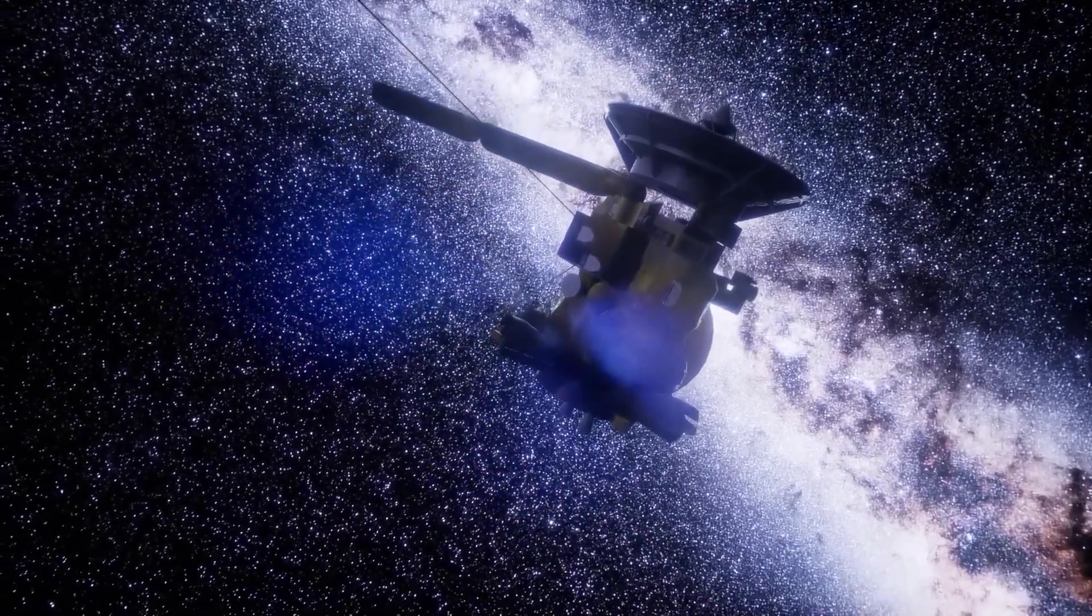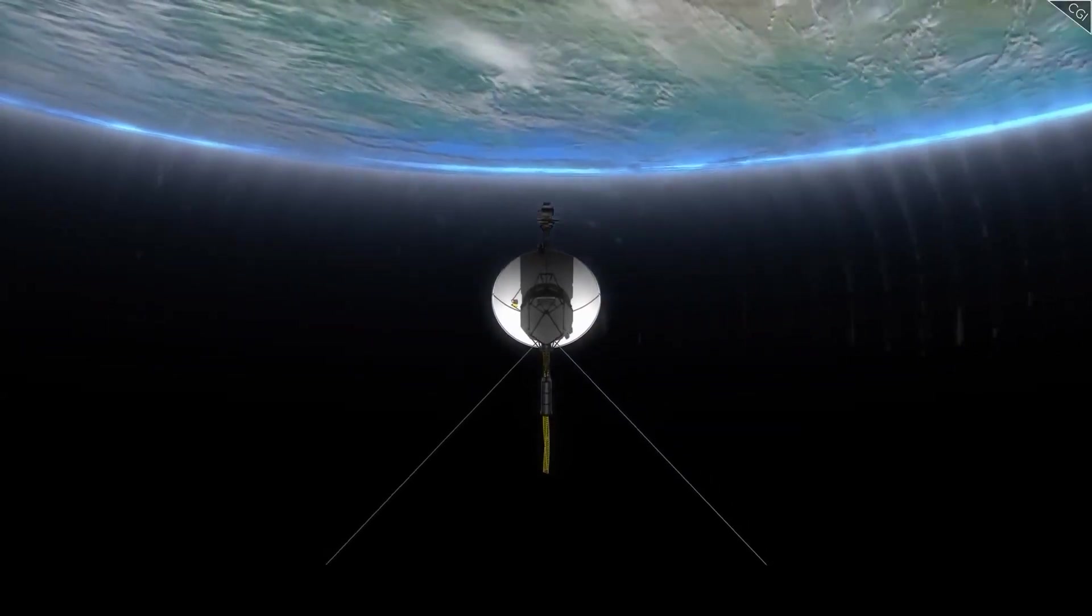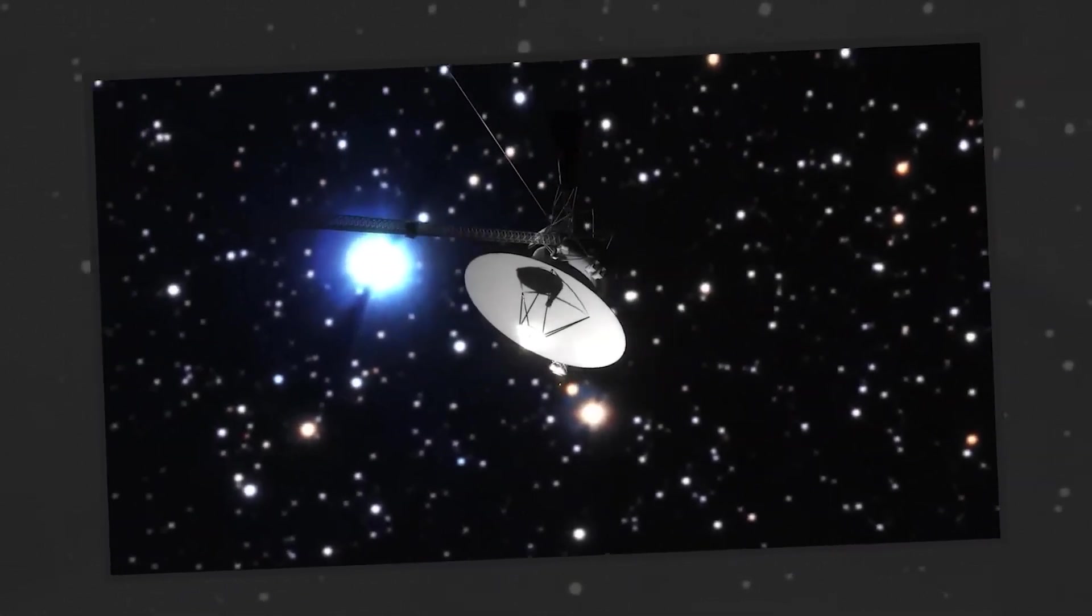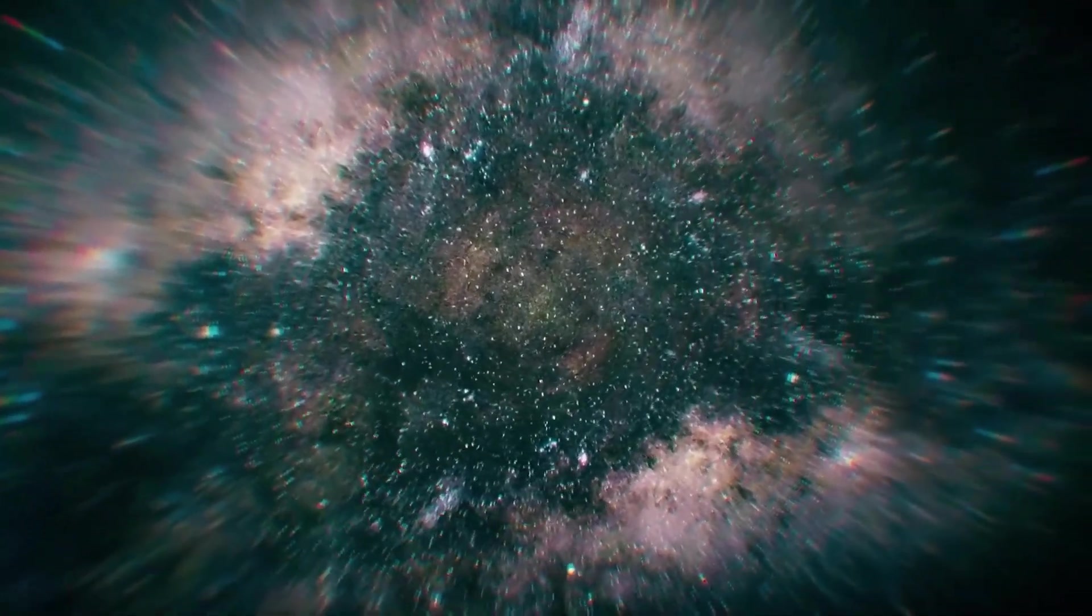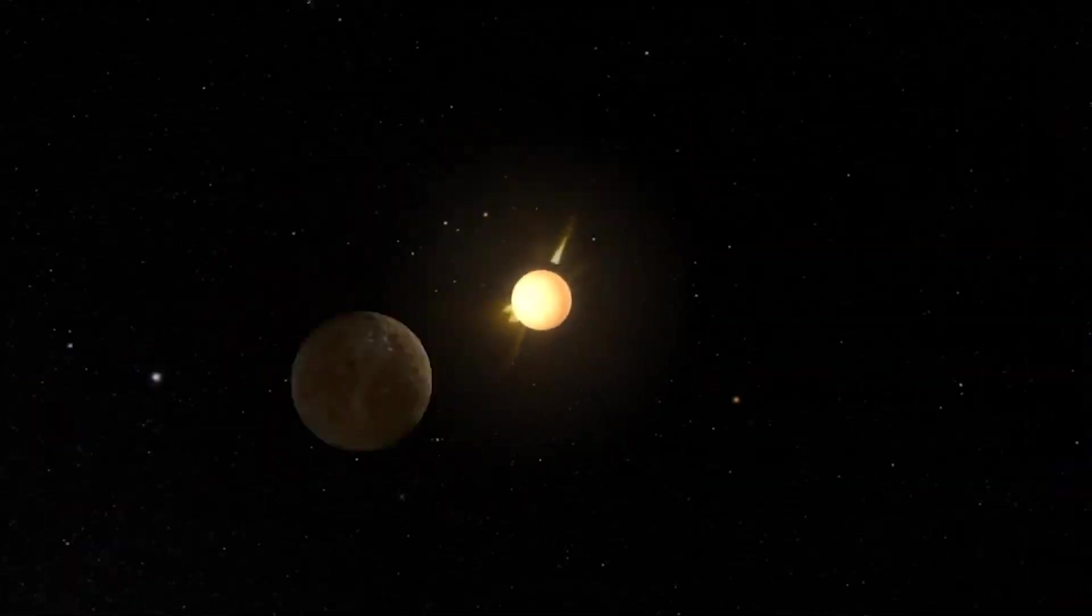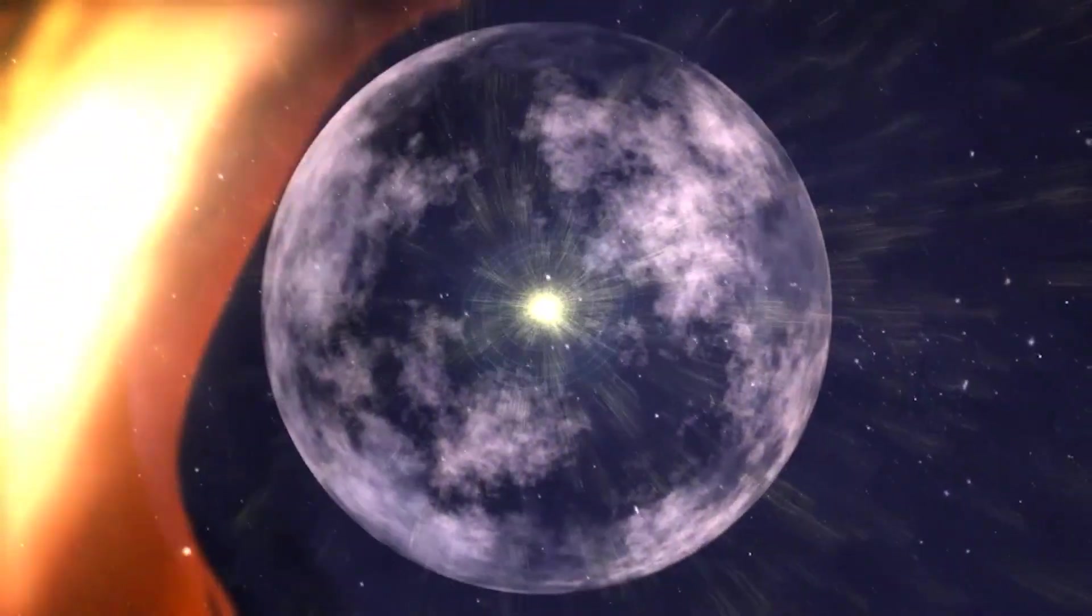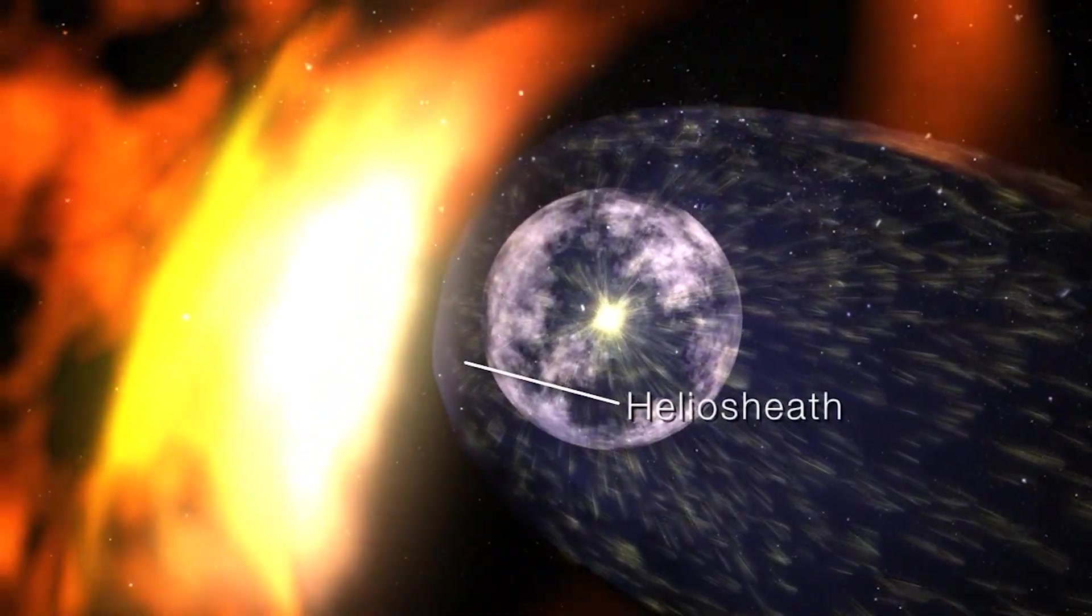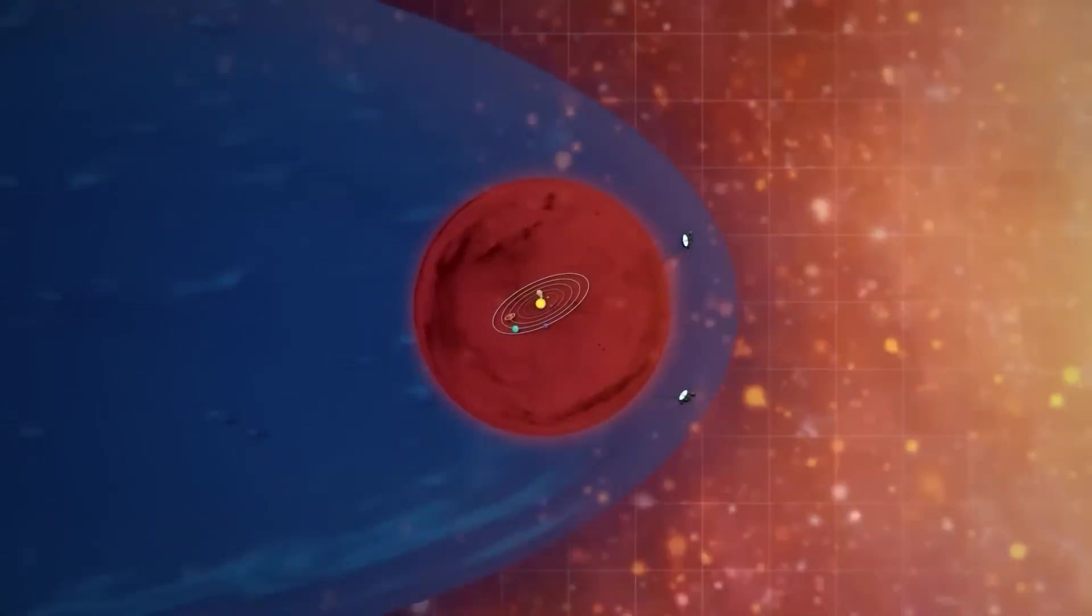But radiation wasn't the only surprise. As Voyager drifted through interstellar space, it began mapping something unexpected: magnetic fields. And these weren't the gentle curves of the sun's reach. These were twisted, tangled, and unexplained. What Voyager found next challenged everything we thought we knew. Magnetic fields that shouldn't be there. We once believed the space beyond the sun was calm, empty, and directionless. But Voyager 1 changed that. As it crossed the heliopause, its instruments picked up powerful magnetic fields. And not just any fields, ones that defied predictions.